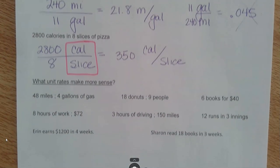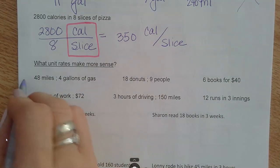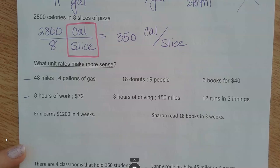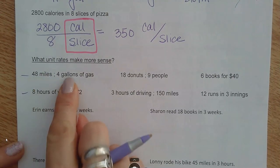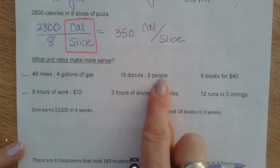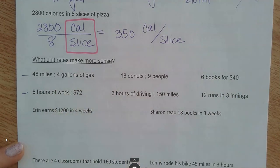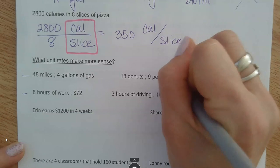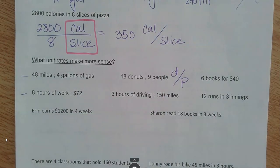Pause and do these next six problems. Think about which way makes more sense — would you do miles per gallon or gallons per mile? Donuts per person or people per donut? Think about which way makes more sense and write those down. Pause until you've done all six, just setting up the label and the unit rate that makes more sense.